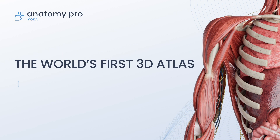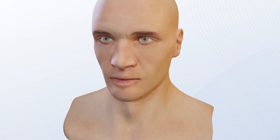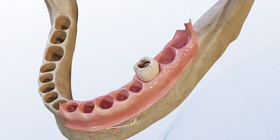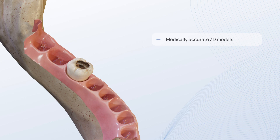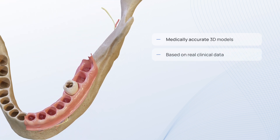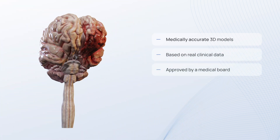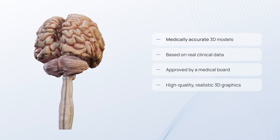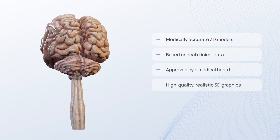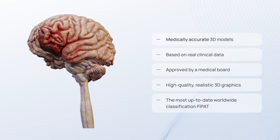VOCA Anatomy Pro is the world's first comprehensive 3D atlas of normal anatomy and anatomical pathology. Its medically accurate 3D models are based on real clinical data and approved by a medical board. It boasts exceptionally high-quality realistic 3D graphics and incorporates anatomical structures classified according to the latest global standards.